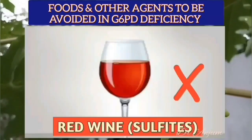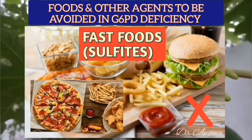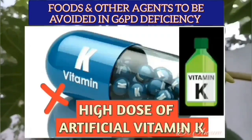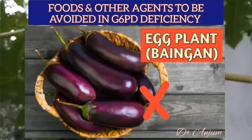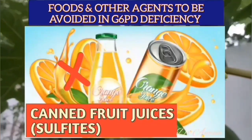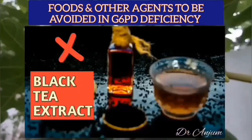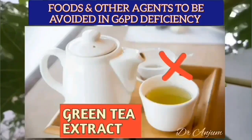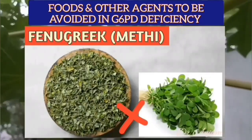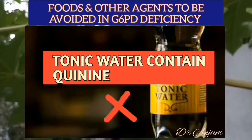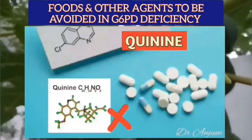Also avoid artificial ascorbic acid, red wine, coke, fast foods, high dose of vitamin K, bitter gourd, eggplant, canned fruit juices, Chinese herbs and Chinese food, peanut and peanut butter, black tea extract, green tea extract, waxed fruits and vegetables, fenugreek or methi, tonic water, dried fruit except plum and dark raisin, and processed fruits and vegetables.